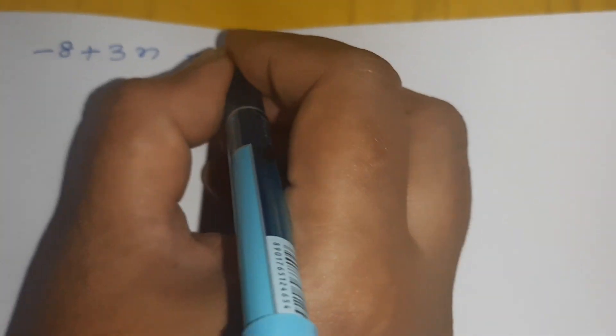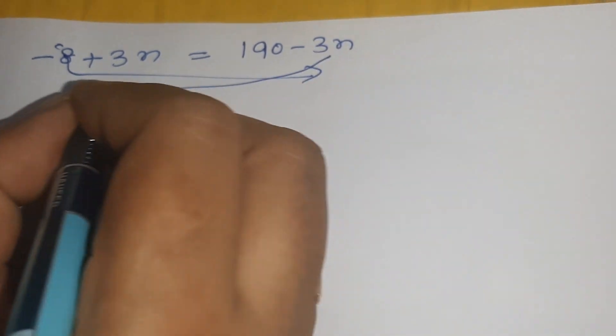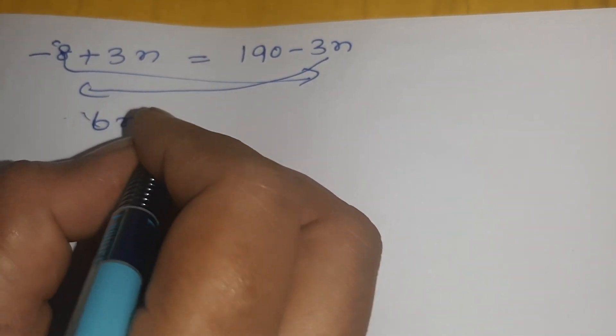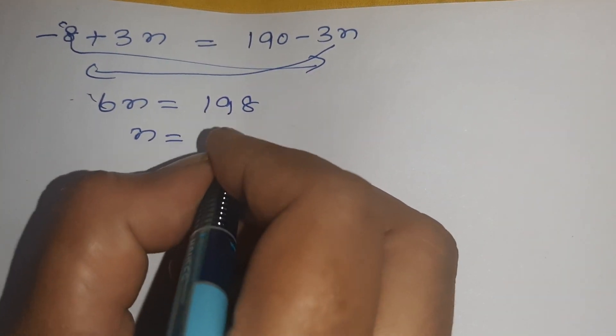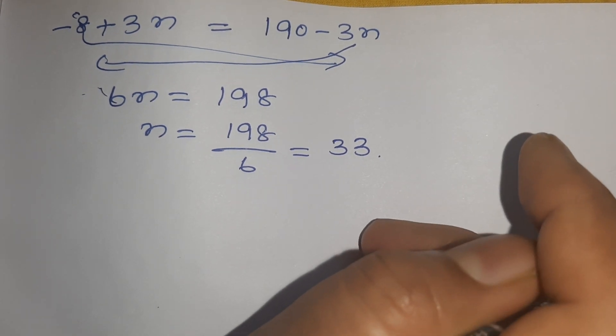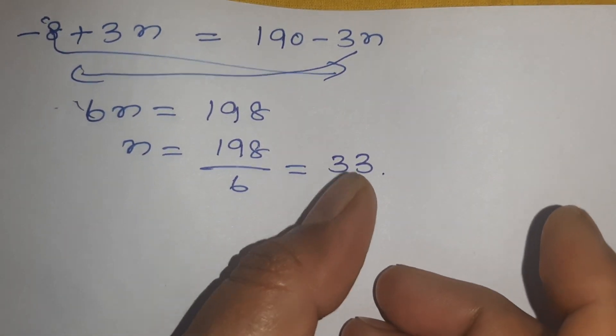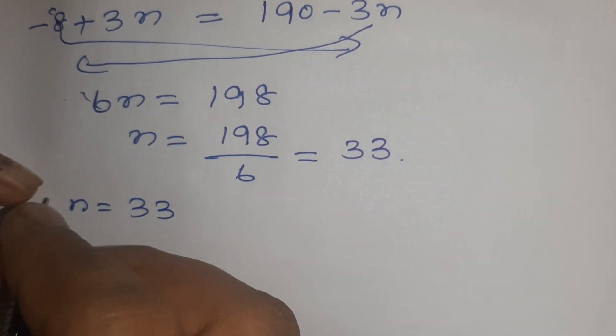Now the question is: for what value of N are the Nth terms of both APs equal? So we set -8 + 3N = 190 - 3N. Bringing like terms together: 3N + 3N = 190 + 8, so 6N = 198, therefore N = 198 ÷ 6 = 33. At N = 33, both APs are equal.